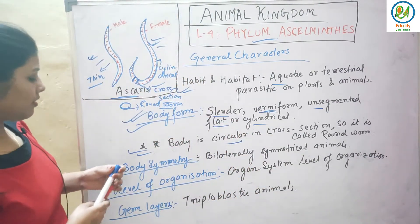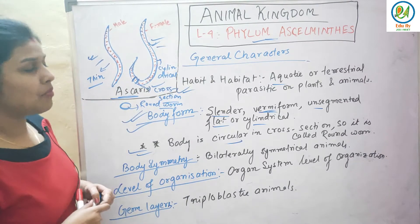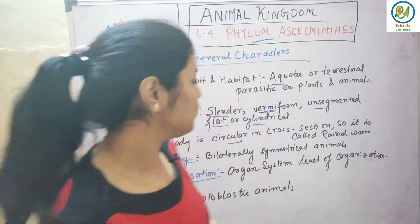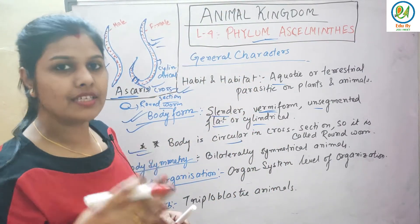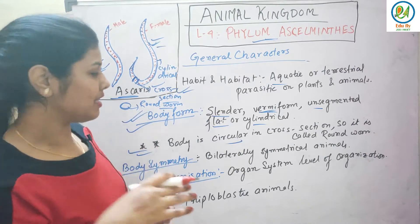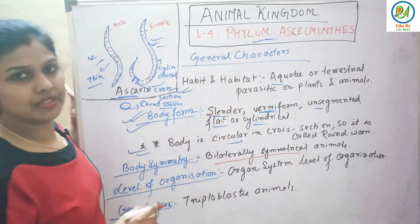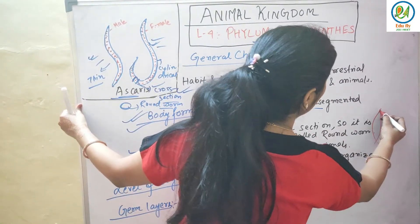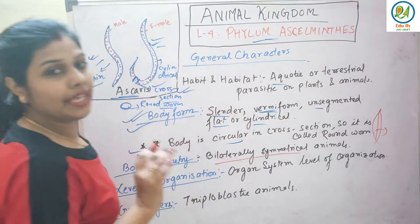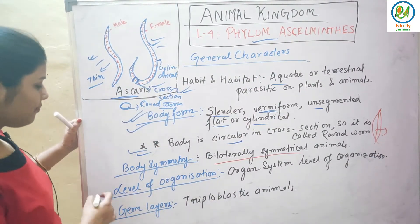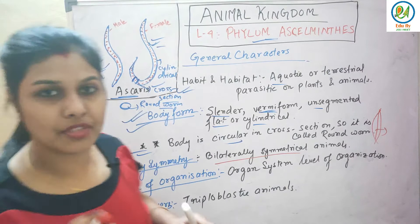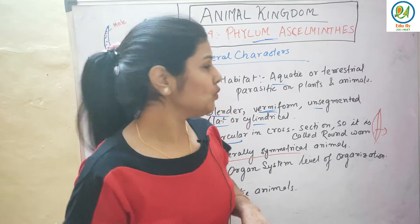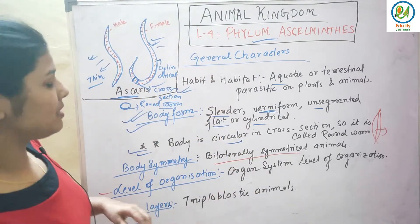Next is body symmetry. As I have told you from previous phyla, they are more advanced. They are bilaterally symmetrical animals. The body can be divided into two equal halves. I will explain the terminology from the very basic so that there are no doubts.